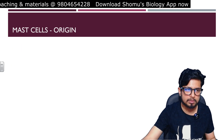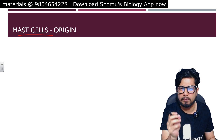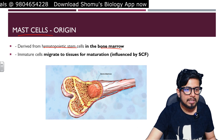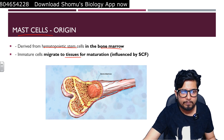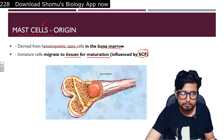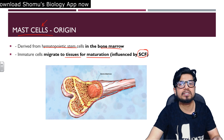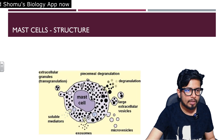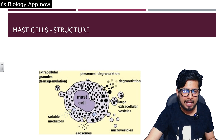Now let's talk about mast cells, which are very similar to basophils with only minor differences. Mast cells also originate from hematopoietic stem cells of the bone marrow. The immature cells migrate to tissues for maturation, and their maturation requires stem cell factor, or SCF — whereas basophil maturation requires interleukin-3.